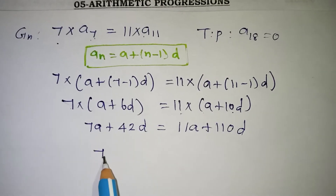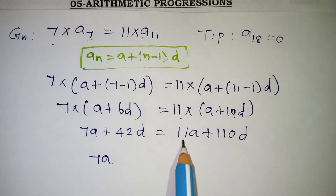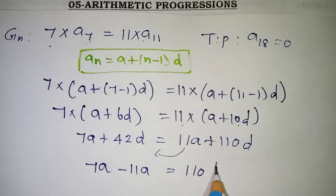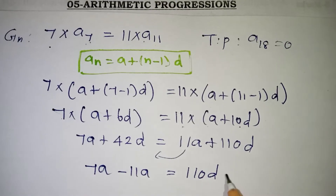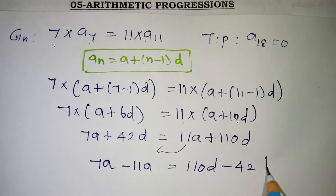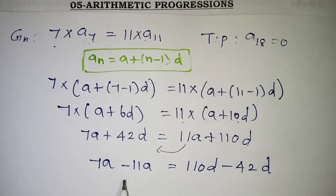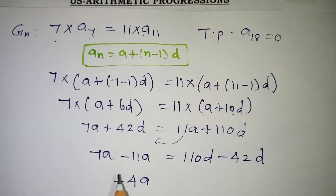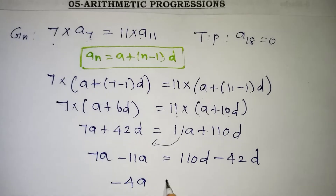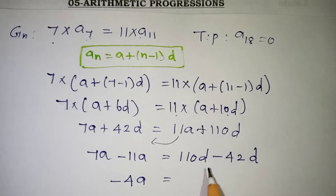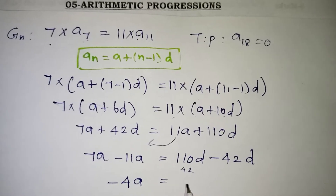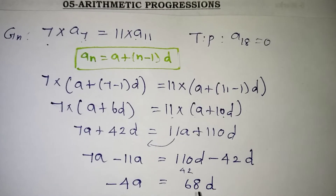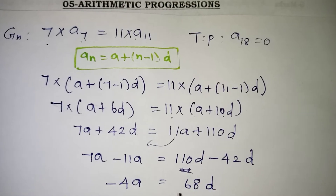Rearranging: 7A - 11A = 110D - 42D, which gives -4A = 68D.